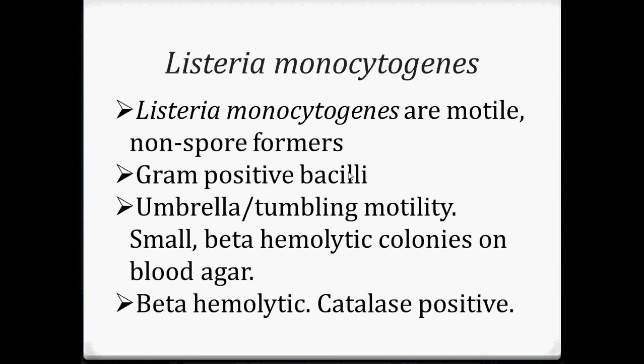The next bacteria is Listeria monocytogenes. The genus Listeria is named after Joseph Lister, who was an English pioneer of sterile surgery. Listeria monocytogenes are motile, non-spore formers and gram-positive bacilli. They exhibit an umbrella or tumbling motility and produce small beta-hemolytic colonies on blood agar — beta hemolytic meaning they cause complete hemolysis of blood. They are catalase positive.